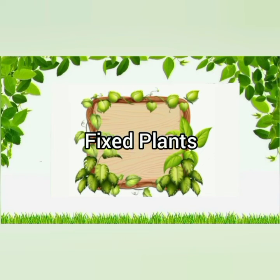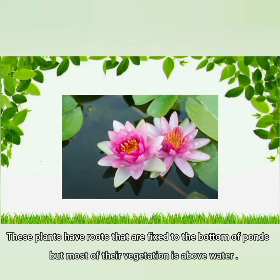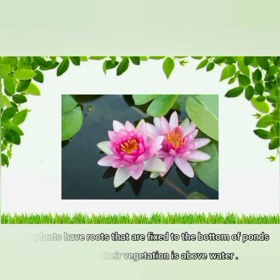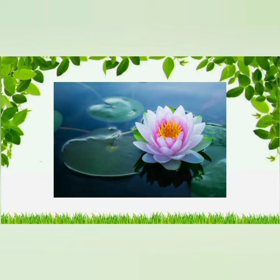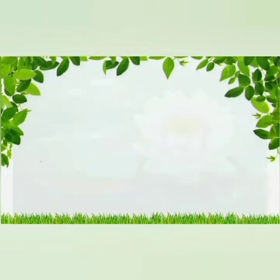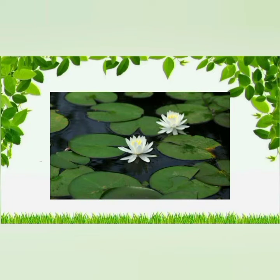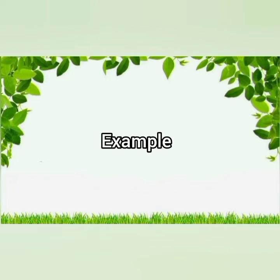Fixed plants have roots that are fixed to the bottom of ponds, but most of their vegetation is above water. They have long, hollow, flexible stems with broad and flat leaves that float on the surface of water. The upper surface of their leaves has a waxy coating and stomata to absorb air.